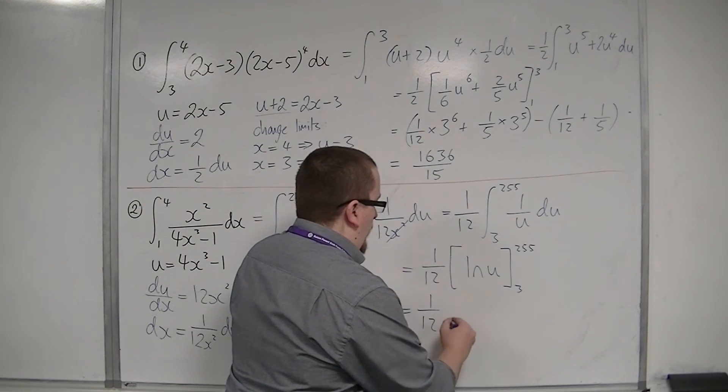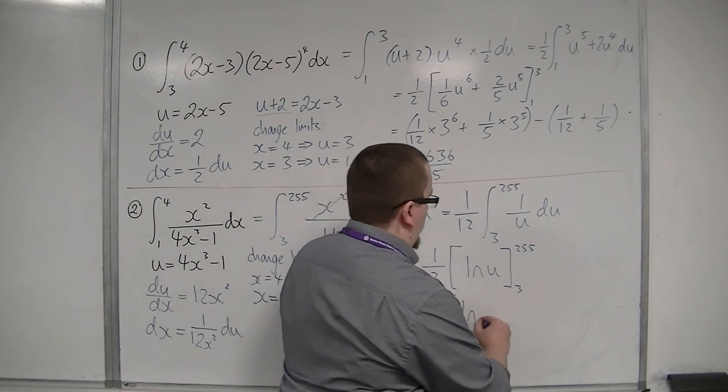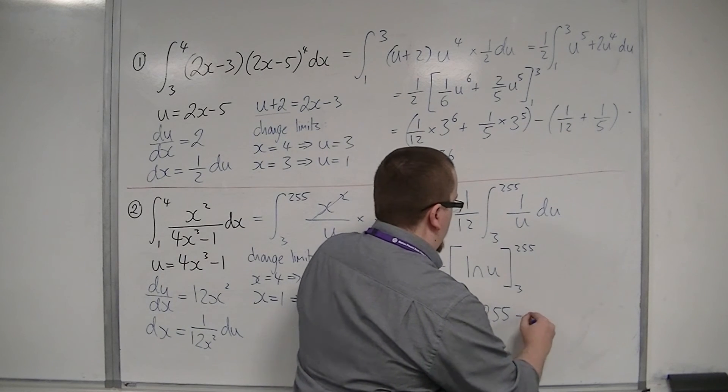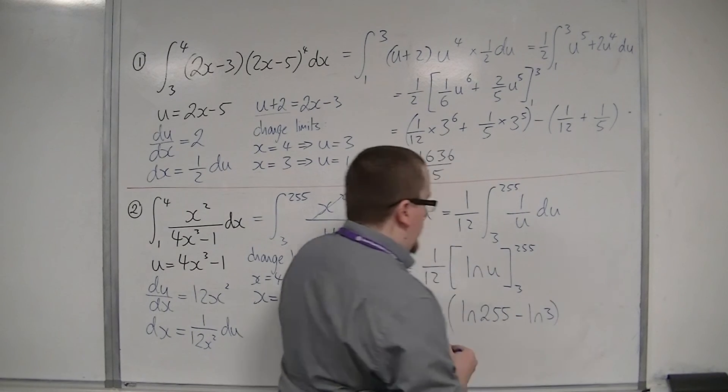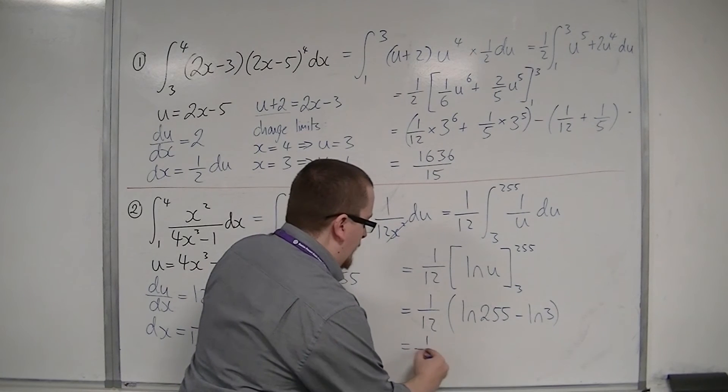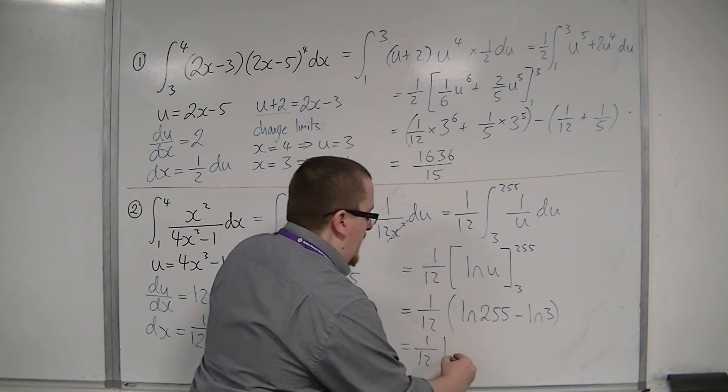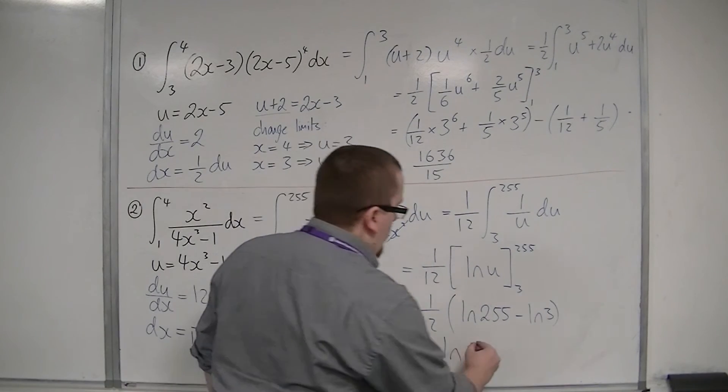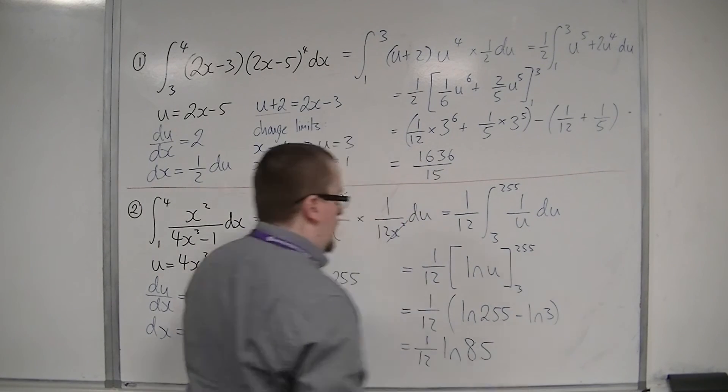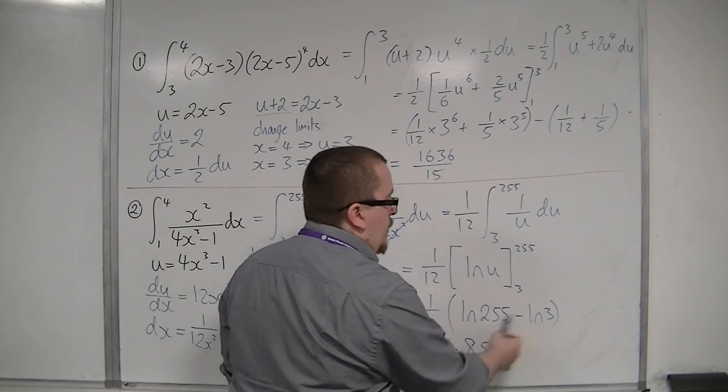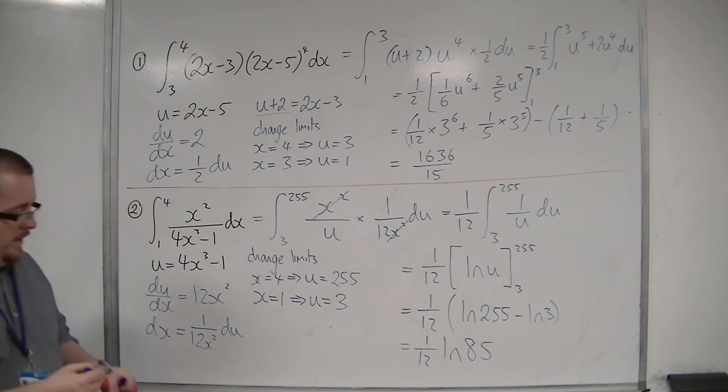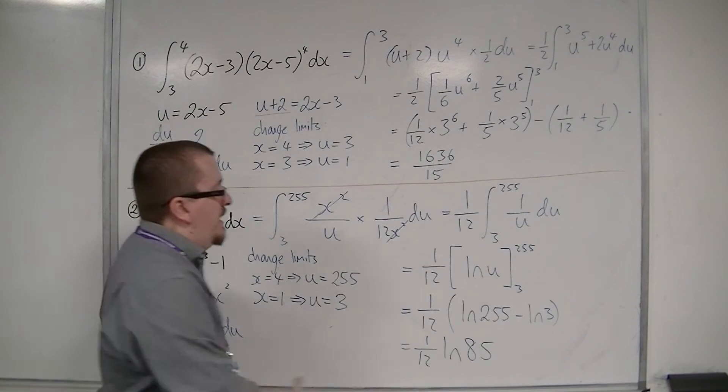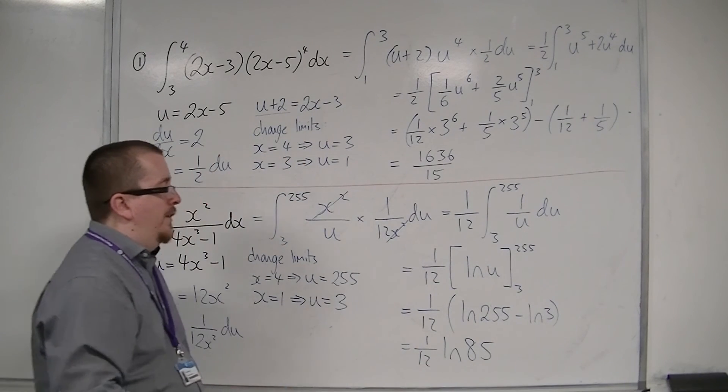So we've got 1 twelfth of log of 255, take away log of 3. Now using a log law, you could then write that as log of 255 over 3, which is log of 85. And so this would be my exact answer, 1 twelfth log 85.